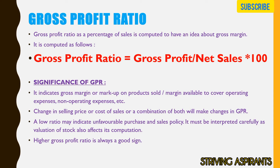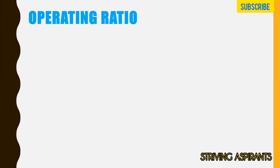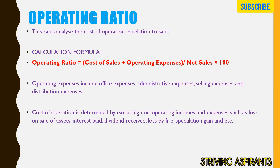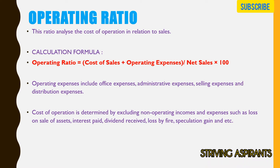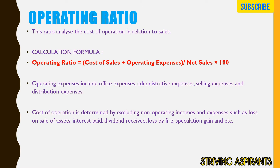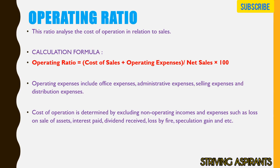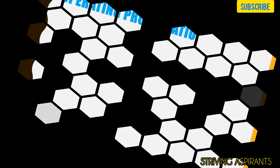The next one is operating ratio. The calculation formula is: Cost of Sales plus Operating Expenses divided by Net Sales multiplied by 100. Operating expenses include office expenses, administrative expenses, and selling and distribution expenses. Cost of operation is determined by excluding non-operating income and expenses such as loss on sale of assets, interest, dividends received, loss by fire, and speculation gains.